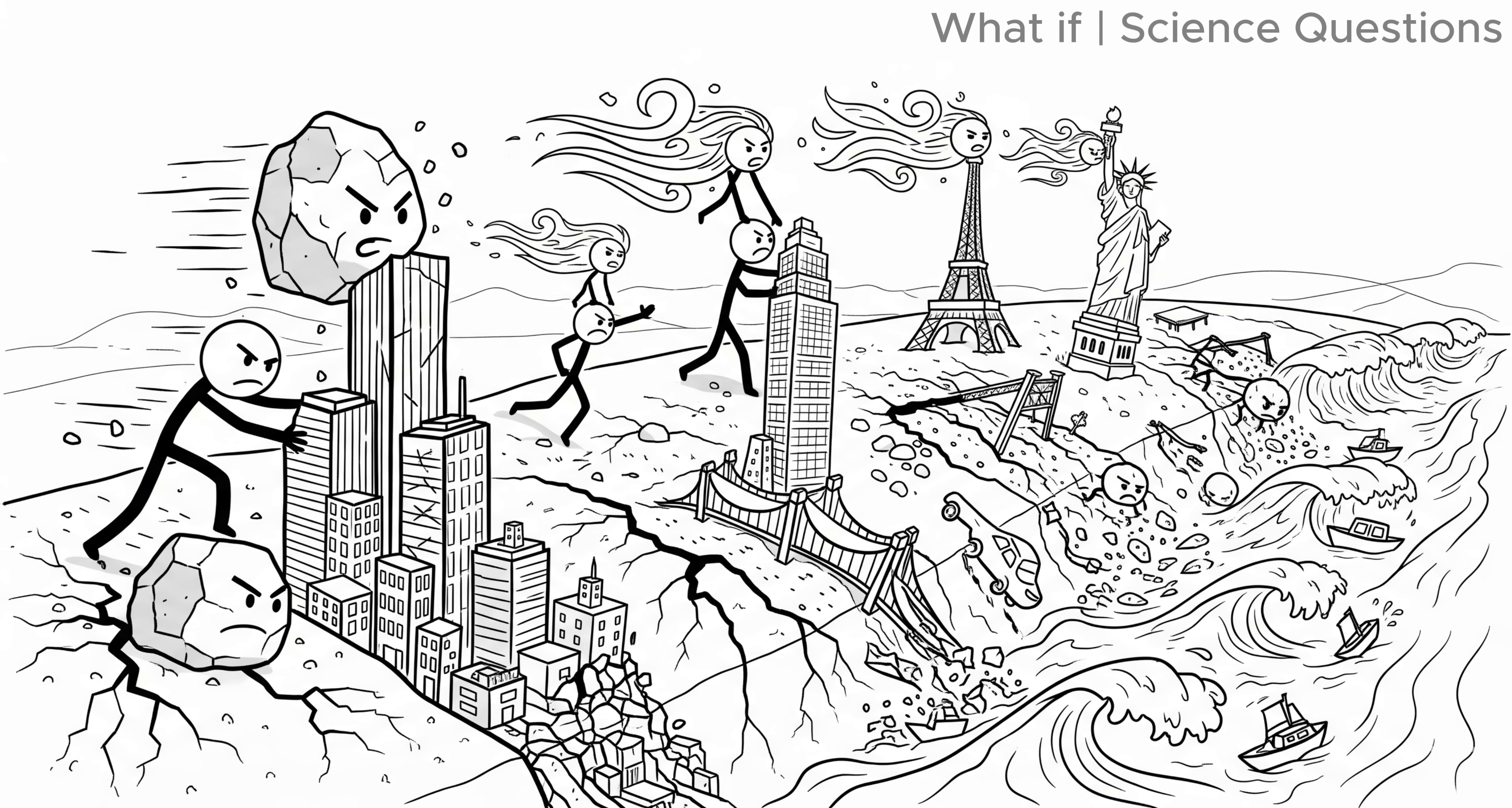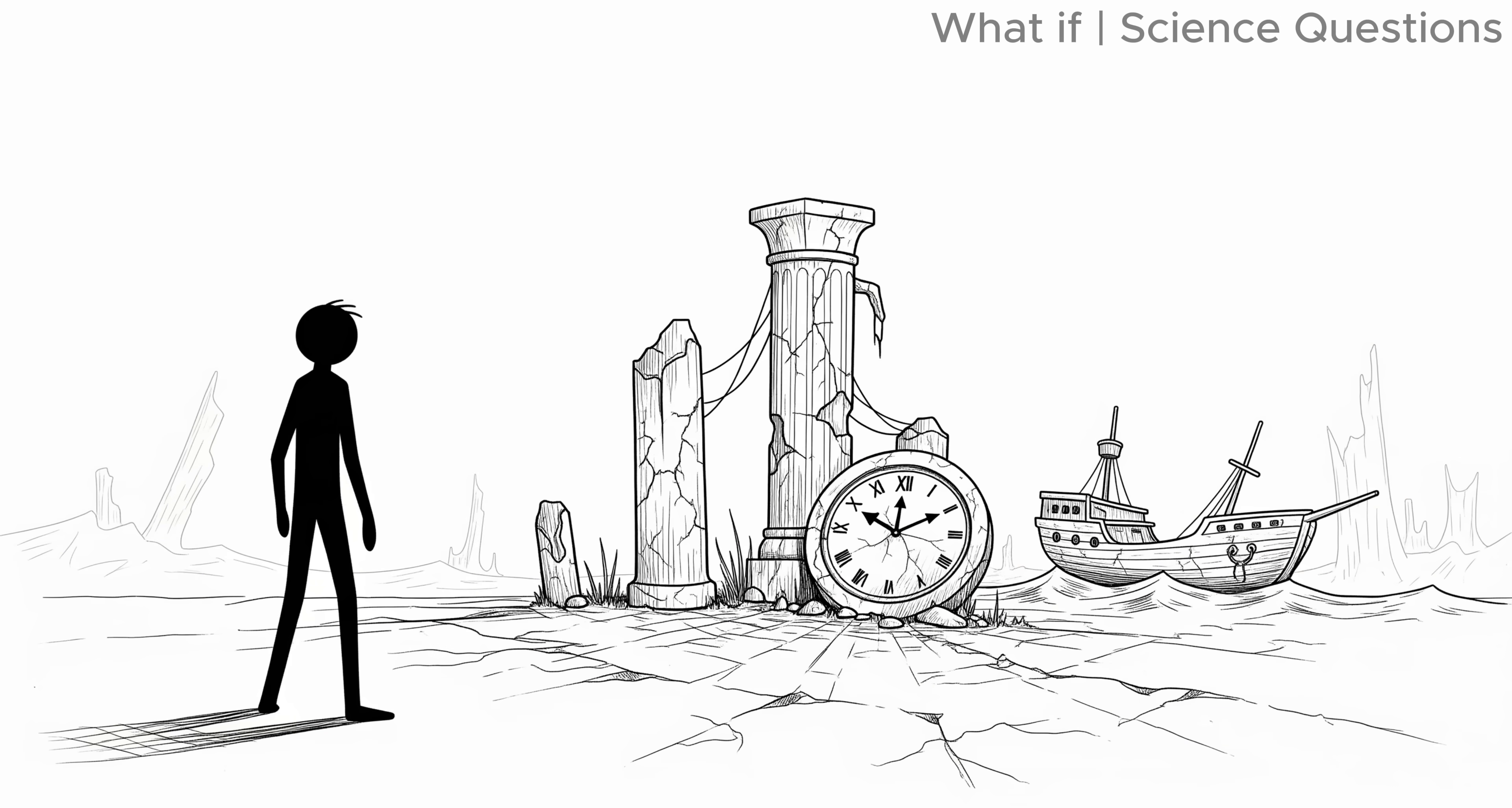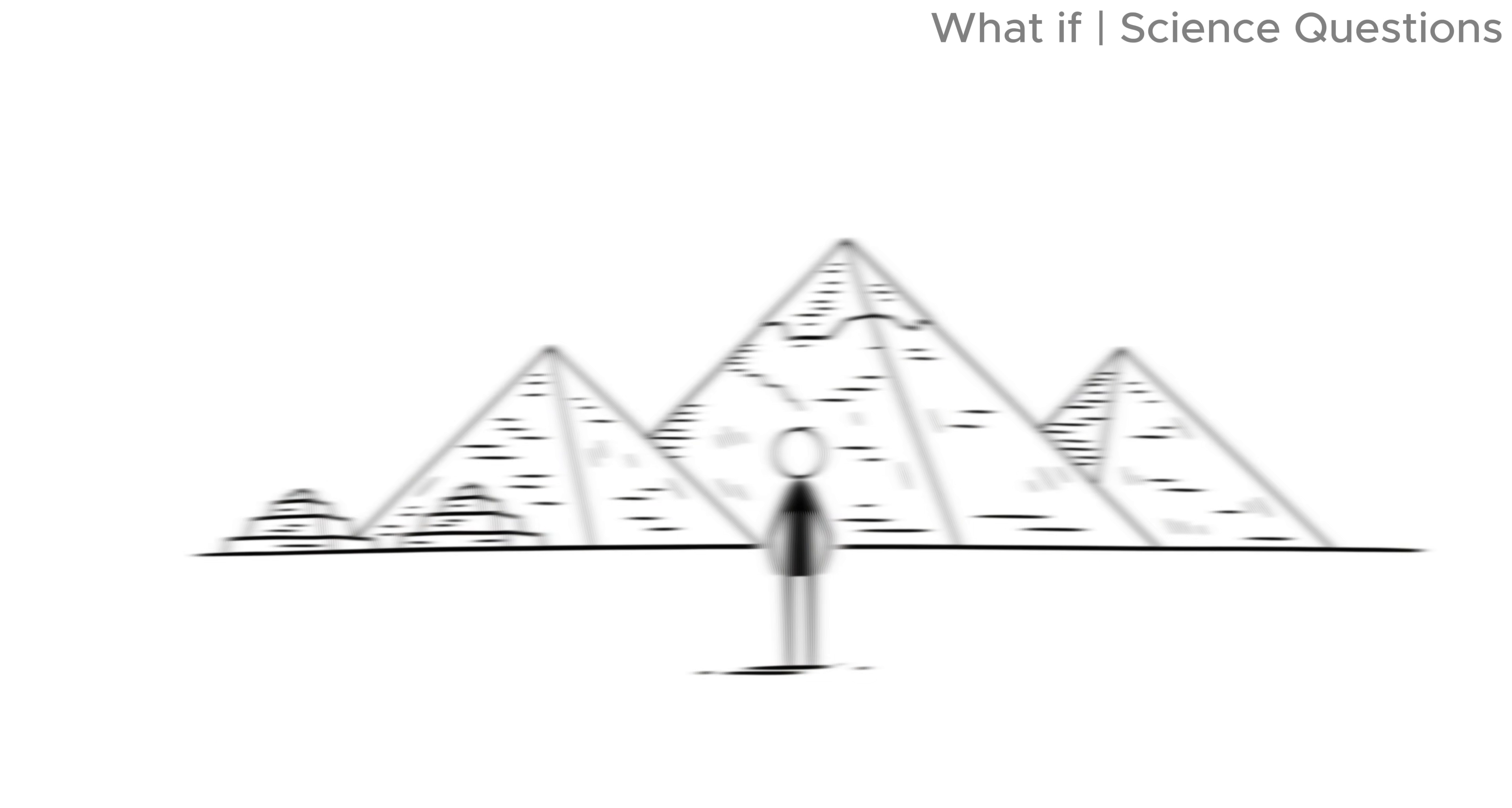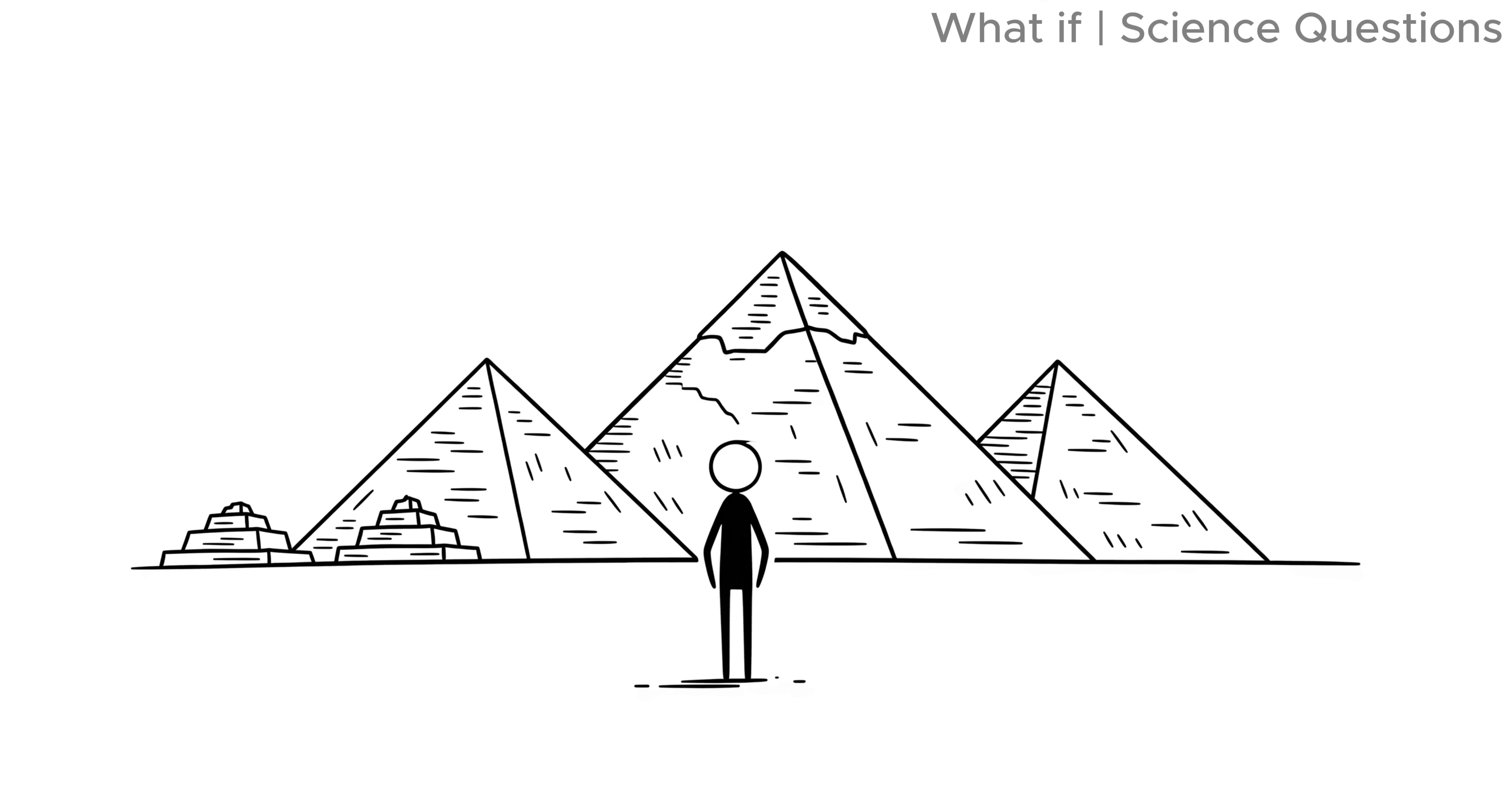Rocks, soil, wind, and water would grind down every trace. Yet some objects would cling to existence. The pyramids of Egypt, for example, might still stand after thousands of years because they've already survived that long without us.